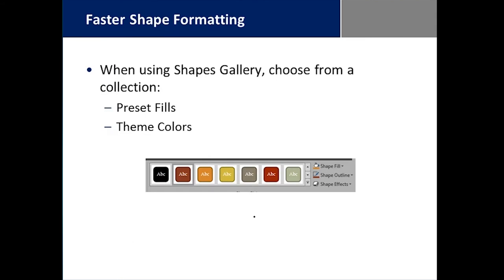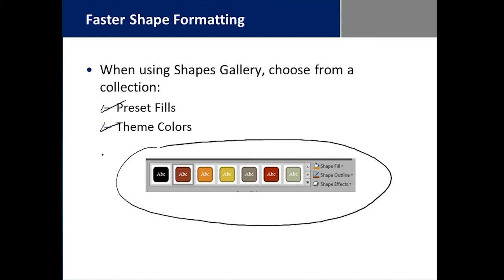In Word, we have a Shapes Gallery. When you choose from the collection, you have a bunch of preset fills and theme colors to work with. The point is to be able to format shapes much faster than previously and have them all match the color combinations of the color palette that's already been chosen as a default.